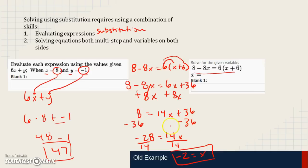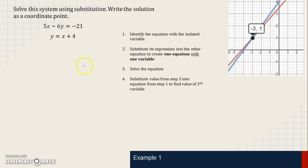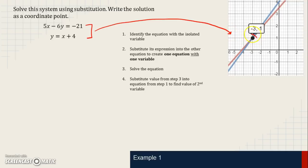So how do those two skills fit into what we're doing today? We'll figure that out as we go through this example. We're going to solve using substitution and write the solution as a coordinate point. Looking at the graph of both lines, the point they intersect is negative 3, 1. We already know the solution from the graph, but substitution is another way to find it without graphing.